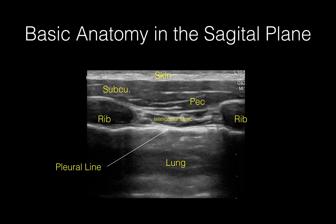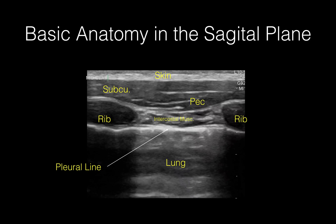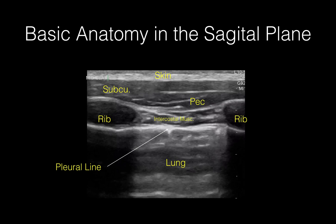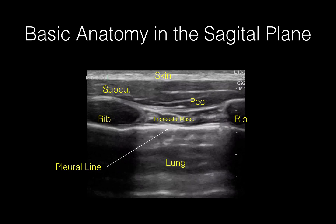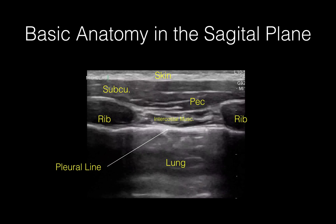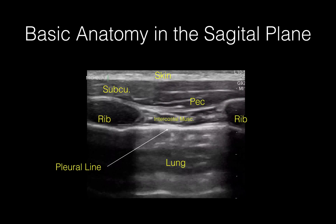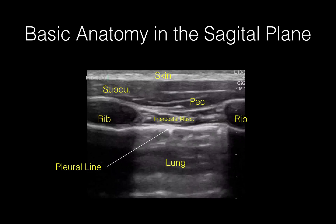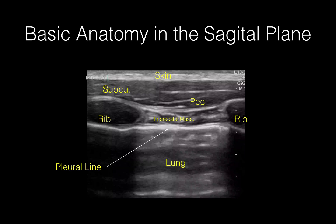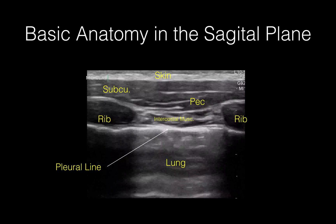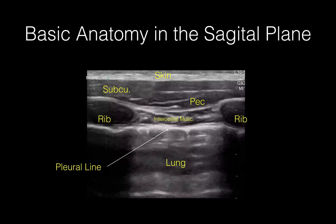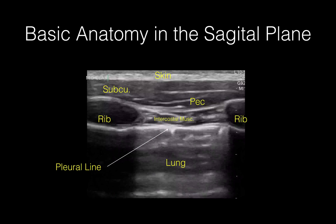Remember, this is the basic anatomy of lung ultrasound in the sagittal plane. You see the skin, then the sub-q, then you go through the pecs, then the intercostal muscles, and the most important part to look at is the pleural line. Here you see sliding and some comet tail artifacts coming off the lungs. If you see that, you know there is no pneumothorax.